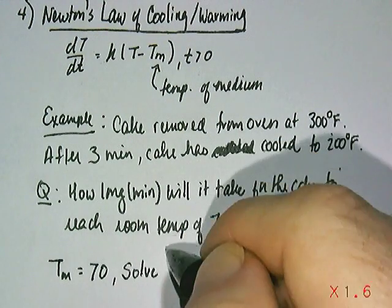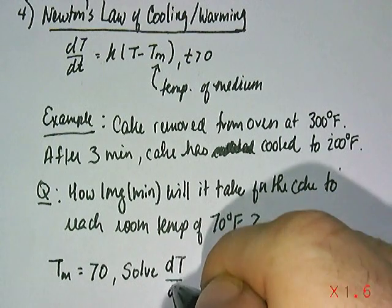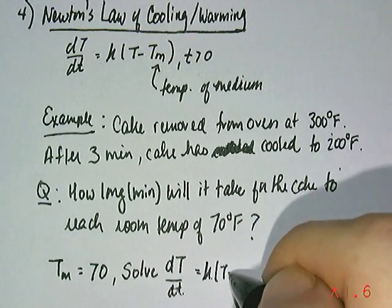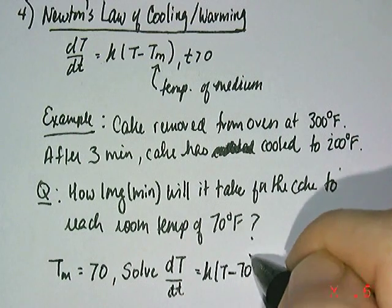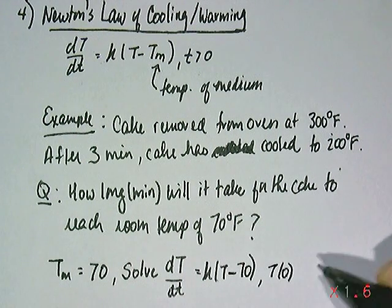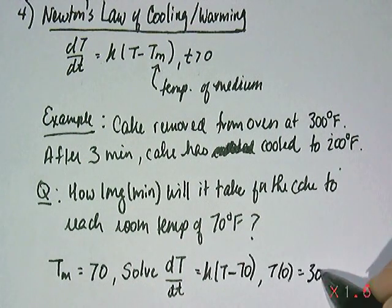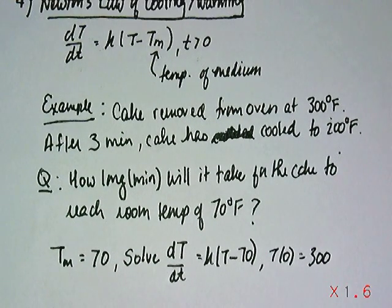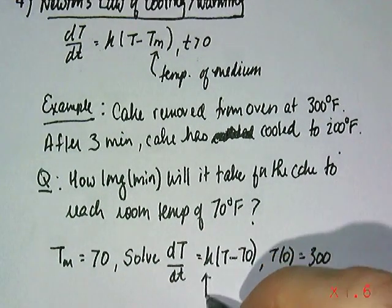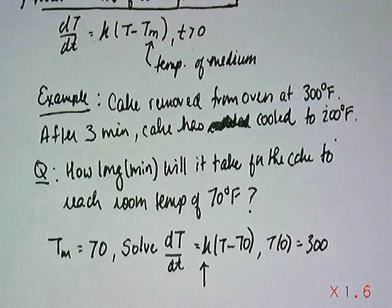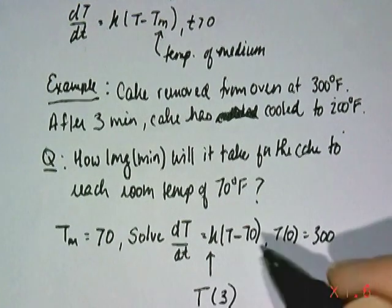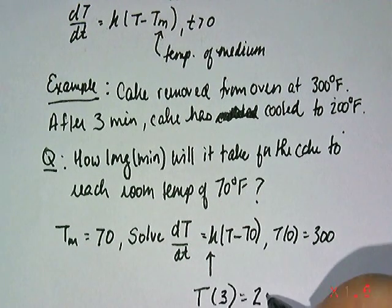And so the problem we're trying to solve, then, is this differential equation: dT/dt is a constant of proportionality times T minus 70, with the initial condition that the cake is initially at 300 degrees. But we also have some other information which is going to be very helpful in determining what that constant of proportionality is—we know that after three minutes, the cake has been cooled to 200 degrees.